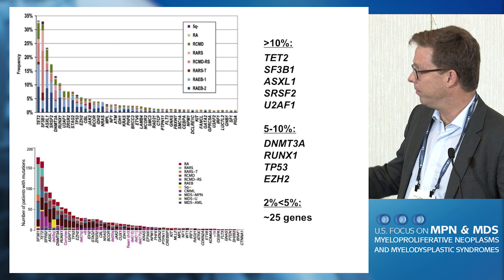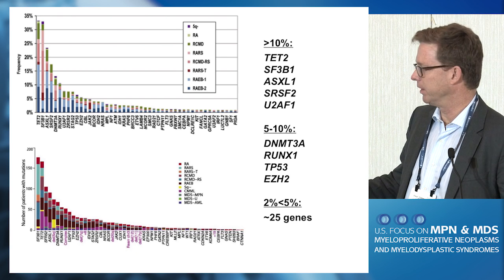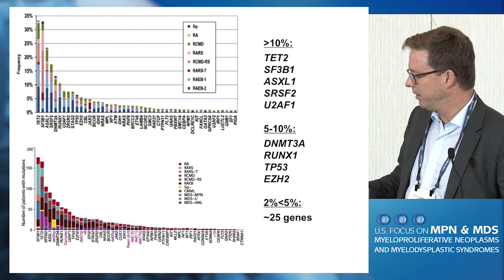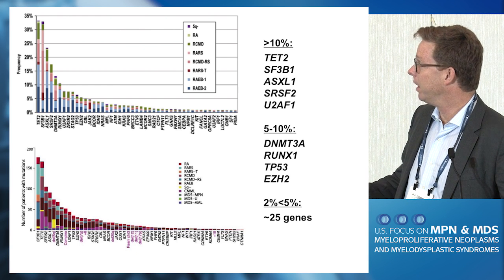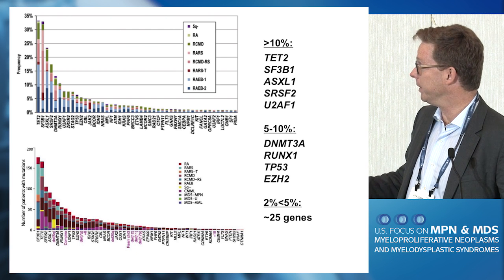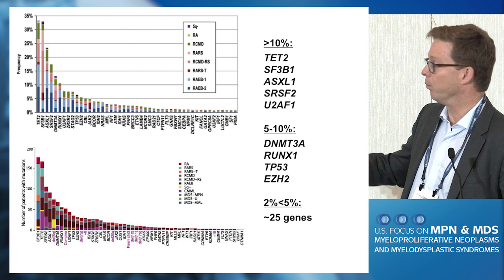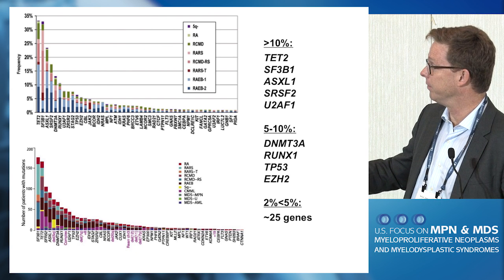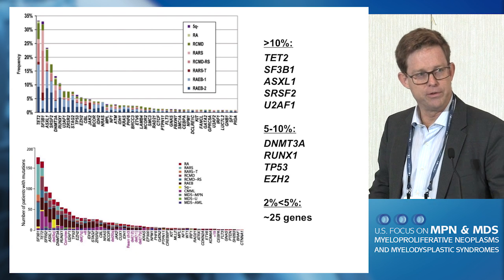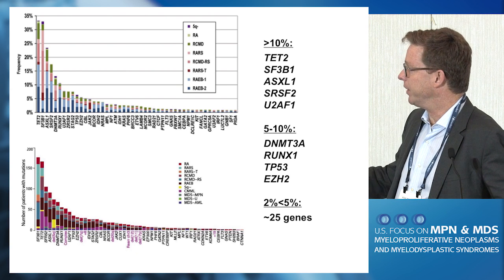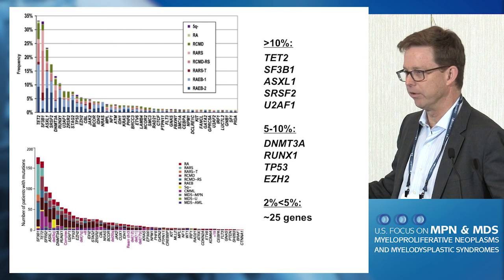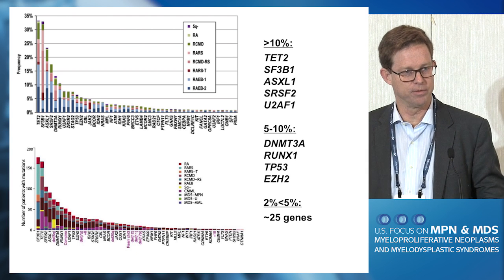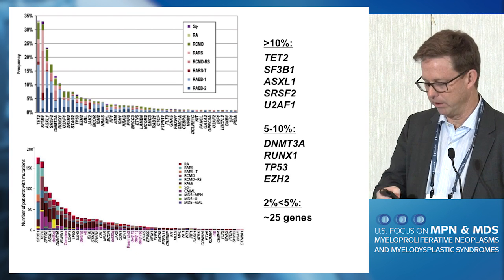Somewhere around 40 or so genes that we now recognize are recurrently mutated in MDS. But like other myeloid malignancies and human malignancies in general, a relatively small number are frequently mutated — say at 10% or more — about 4 or 5 of those, the big spikes on the left. Another cluster of about 4 or 5 genes mutated in about 5 to 10% of patients. But the longest tail — and we don't really know how far this goes — at least another 25 genes that are likely important for MDS because we see them again and again mutated, but at a very low frequency.